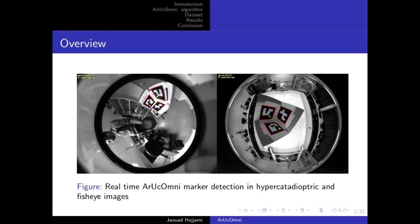ArUco Omni is a generalization of marker detection library for catadioptric and fisheye images. It works also on perspective images because we consider the unified central projection model, and it runs in real-time on off-the-shelf CPUs.